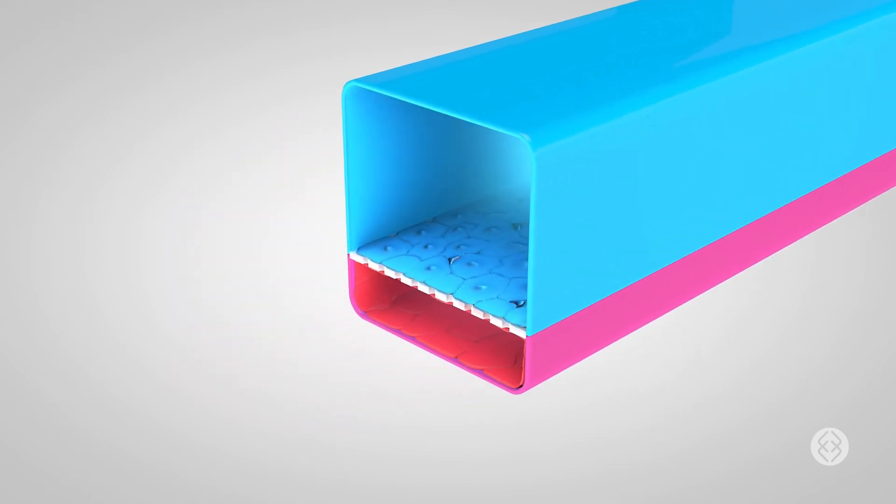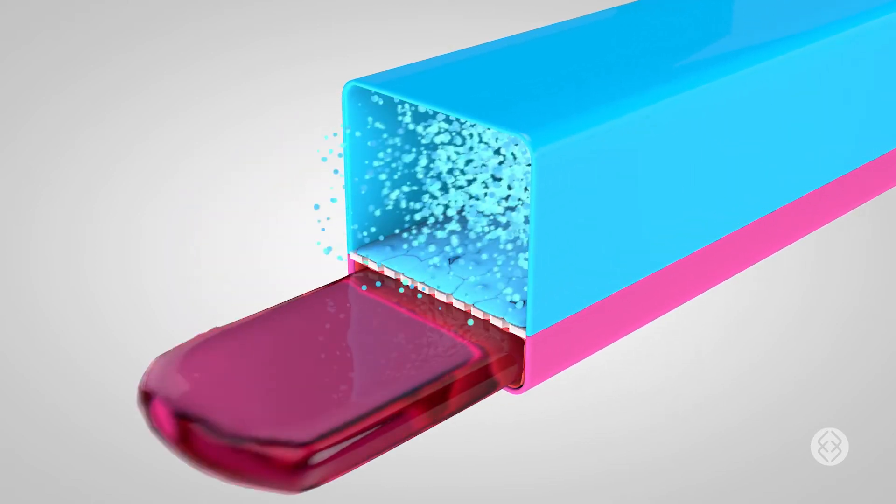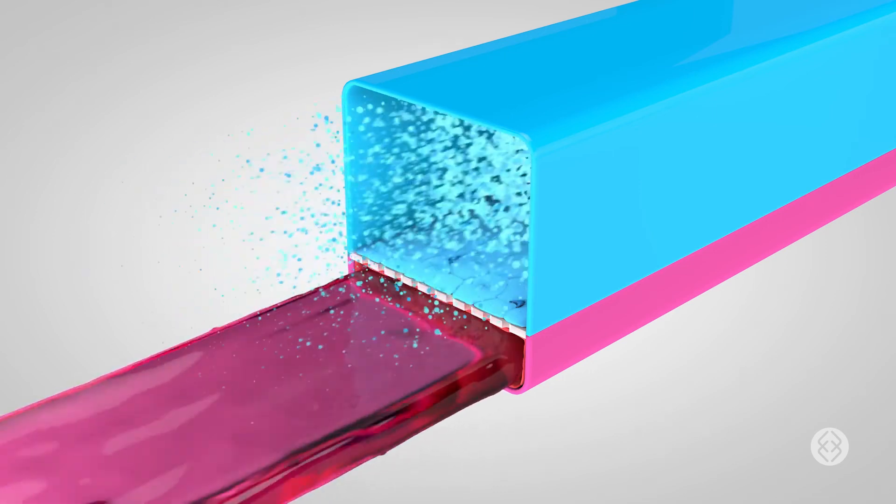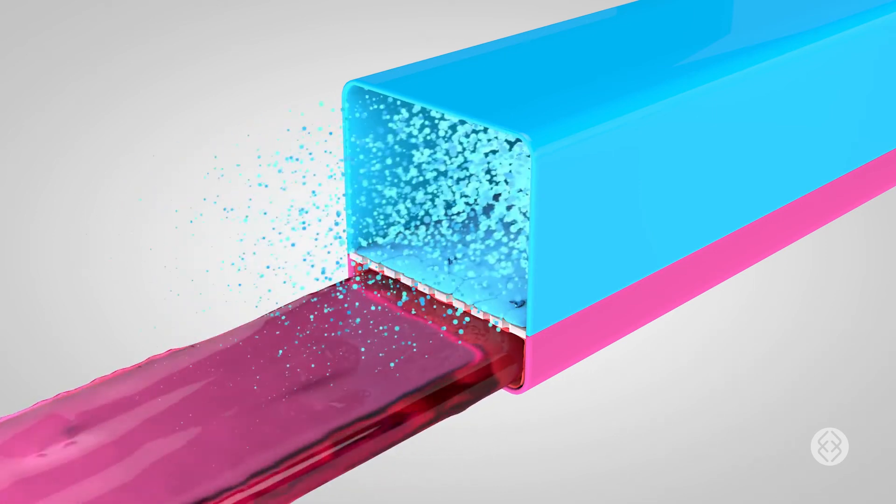The top channel is exposed to air while media that emulates blood flows through the bottom channel and applies shear stress to the cells.